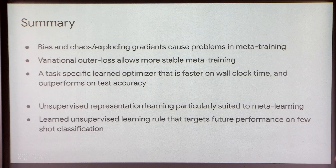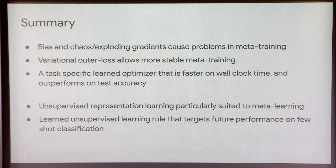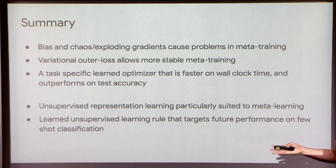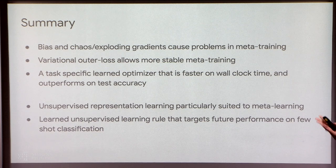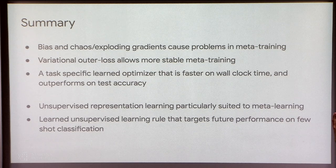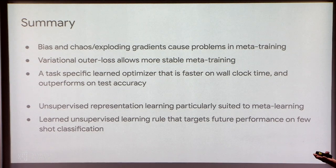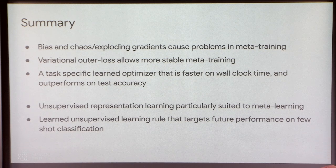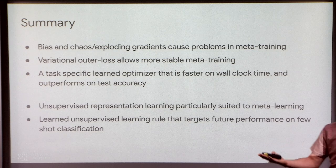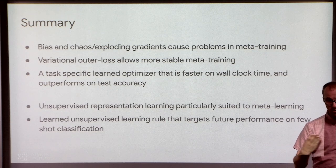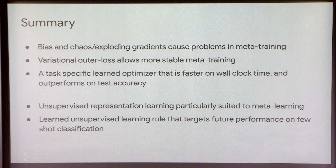Summary of the entire talk: both bias and chaos cause problems in meta-training. We have a proposal for how to fix this by using a variational loss. We demonstrate that it works by training a task-specific learned optimizer. Additionally, meta-learning is particularly nice in that it allows you to target tasks where you can't write down the objective you care about, but you can write down a meta-objective — unsupervised representation learning is one example. We also show that we can train a learned update rule for representation learning.